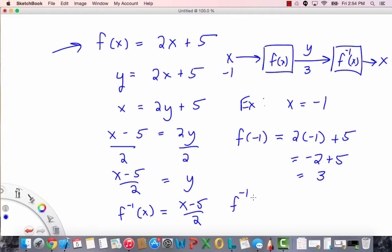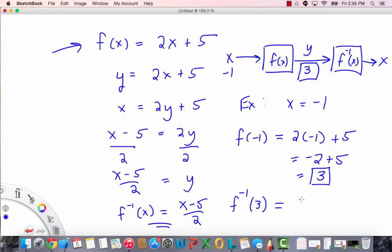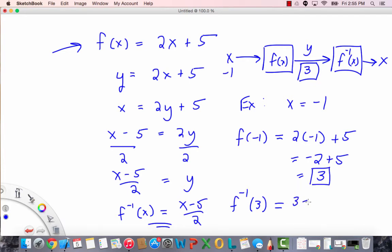So let's check that out. f inverse of 3, so this is 3 that's what's going into the inverse function. f inverse of 3 we're going to use this equation here. We take 3 minus 5 because x is 3 we sub it in here 3 minus 5 over 2 is negative 2 over 2 which is negative 1 and sure enough we get a negative 1 as the output so that worked well.